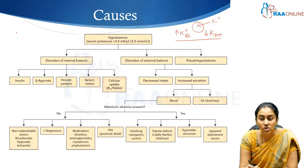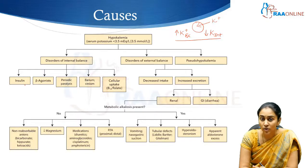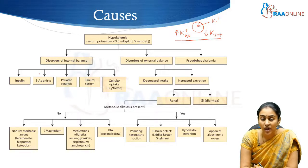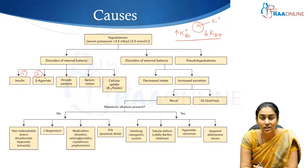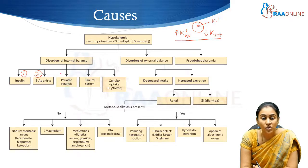The main factors influencing transcellular shift of potassium are two important hormones: insulin and catecholamines — catecholamines primarily through activation of the beta-2 receptor. Any condition causing excessive beta-2 activation, for instance thyrotoxicosis, can cause severe hypokalemia due to excessive adrenergic stimulation. This also applies to patients with hypokalemic periodic paralysis and those on barium or chloride-containing medications.